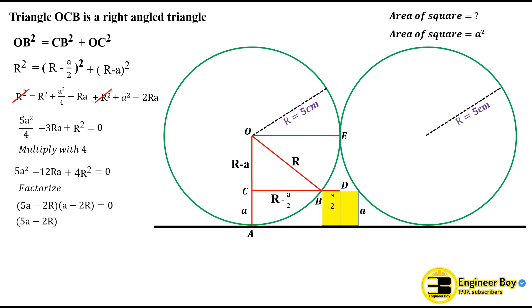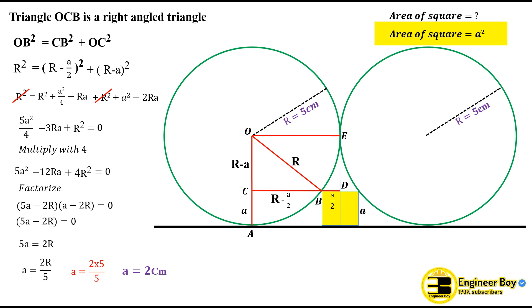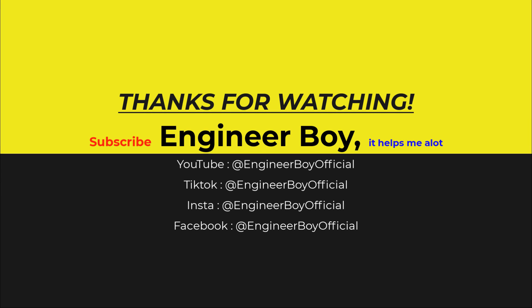From 5a − 2r = 0 we get 5a = 2r, so a = 2r/5. Substituting r = 5 centimeters: a = (2 × 5)/5 = 2 centimeters. Now the area of the square equals a² = 2² = 4 cm². So this is how we calculate the area of the yellow square.